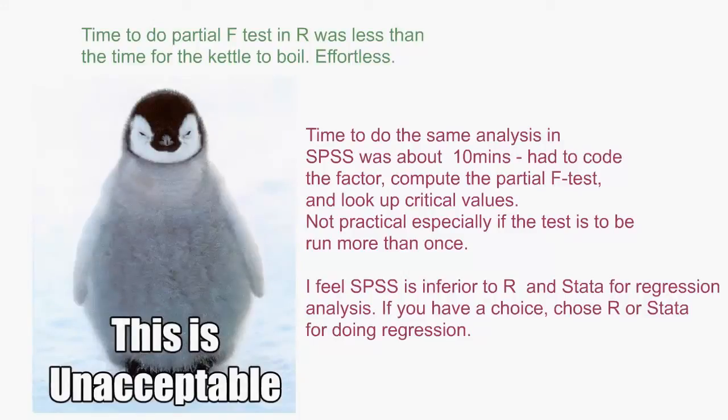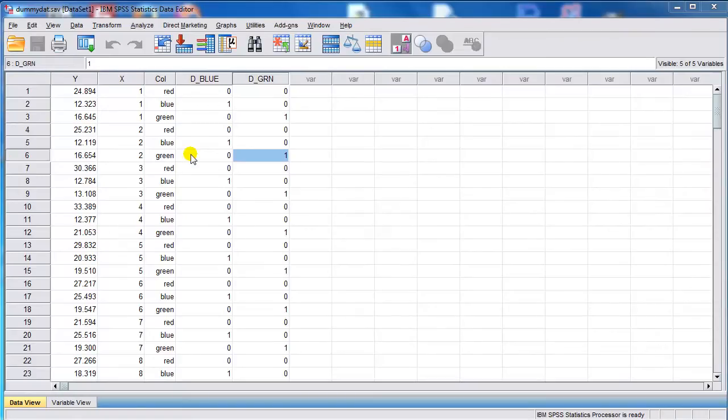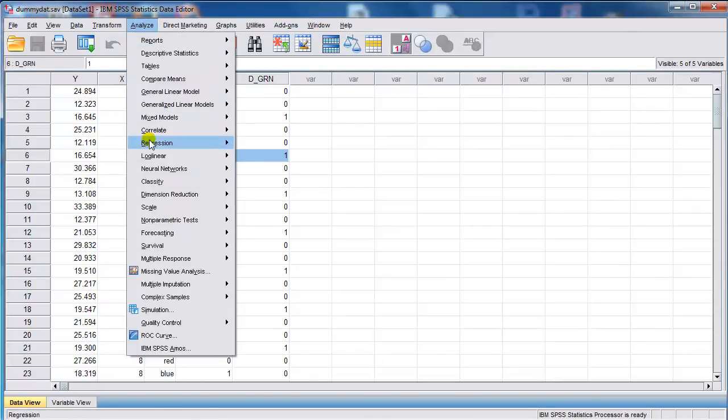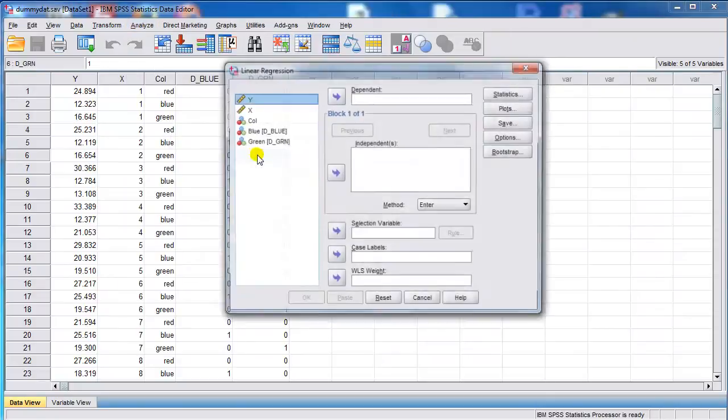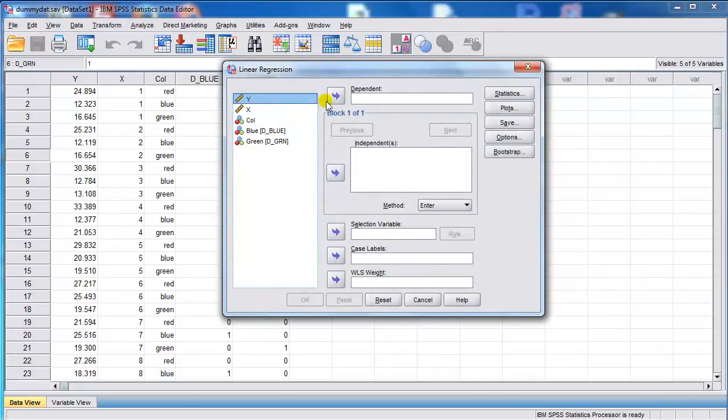Finally, let me show you how to run the two models in SPSS. We can run them one by one, but we can run them as blocks as I'm going to show you how. First, go to Analyze, Regression, Linear. First we want to run the reduced model, so put the Y in the dependent box and X in the independent.